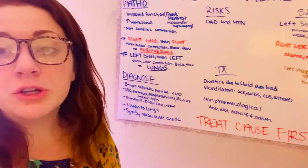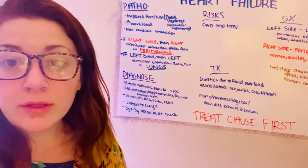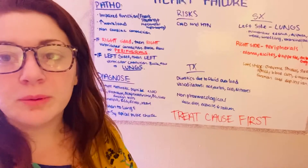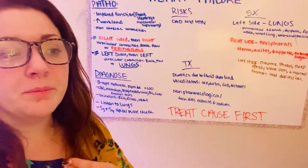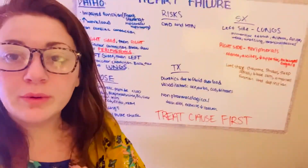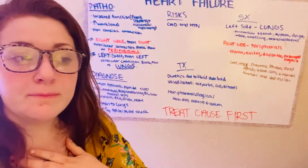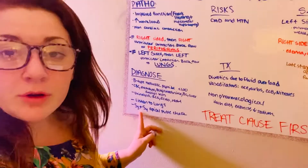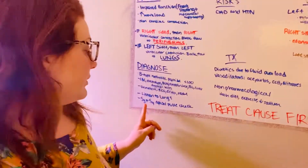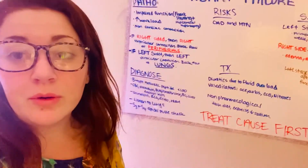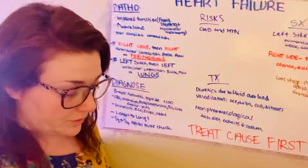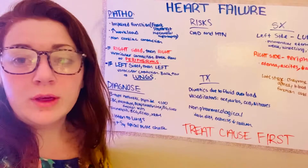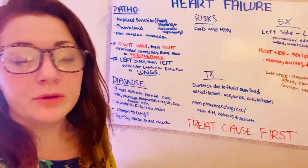When a patient comes in, you can listen to their lung sounds. If they're wheezing, that's pretty typical with heart failure because they have that fluid accumulation — you will hear fluid in there. You could also hear an S3 and S4, which are those atypical heart sounds, like heart murmurs. So you do the apical pulse check as well.